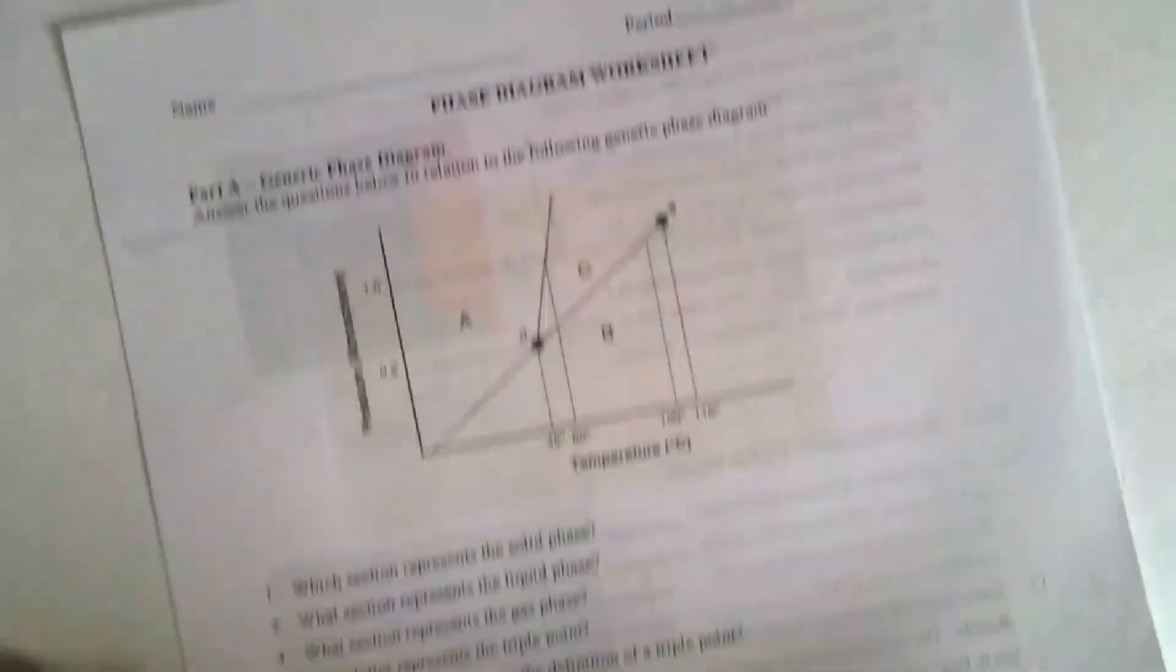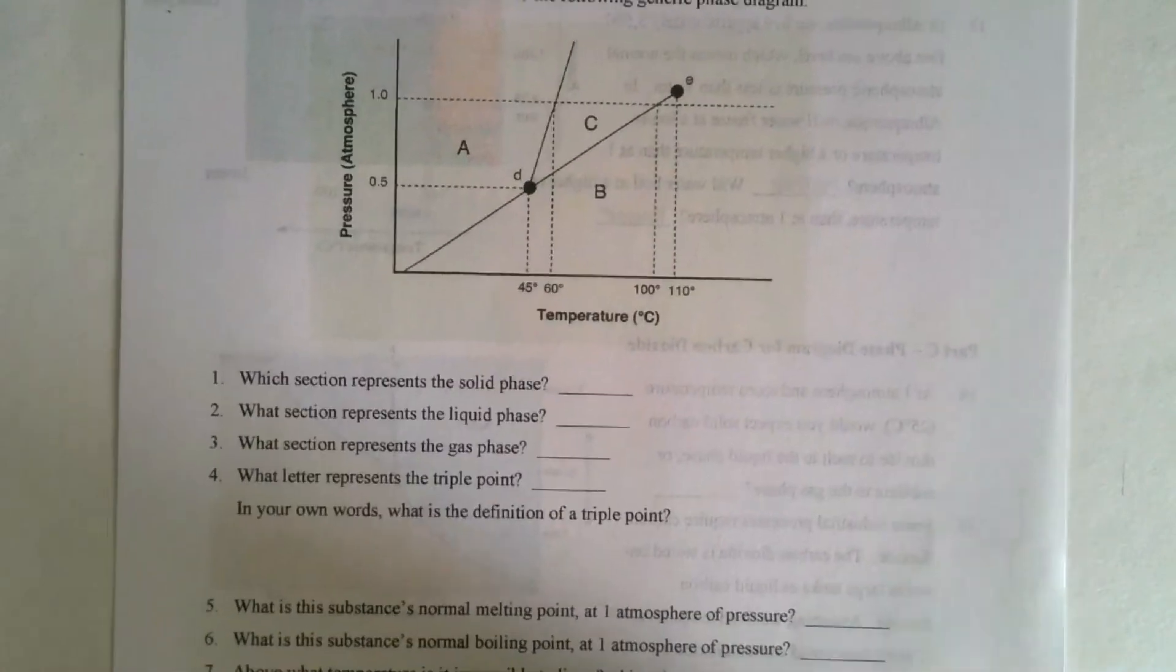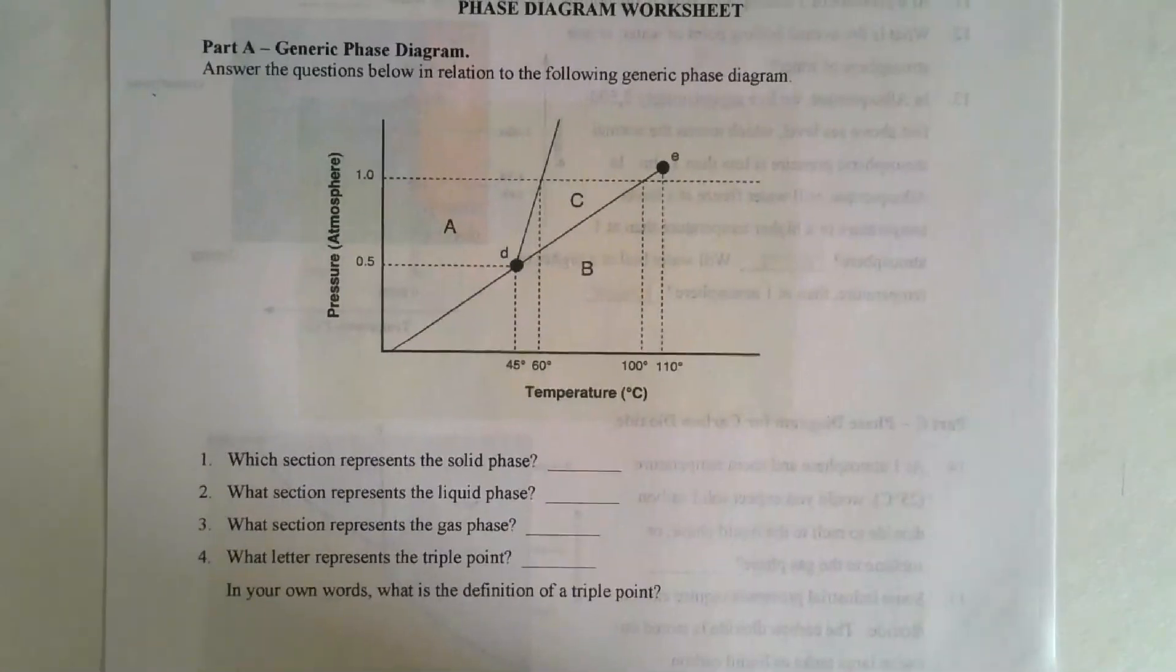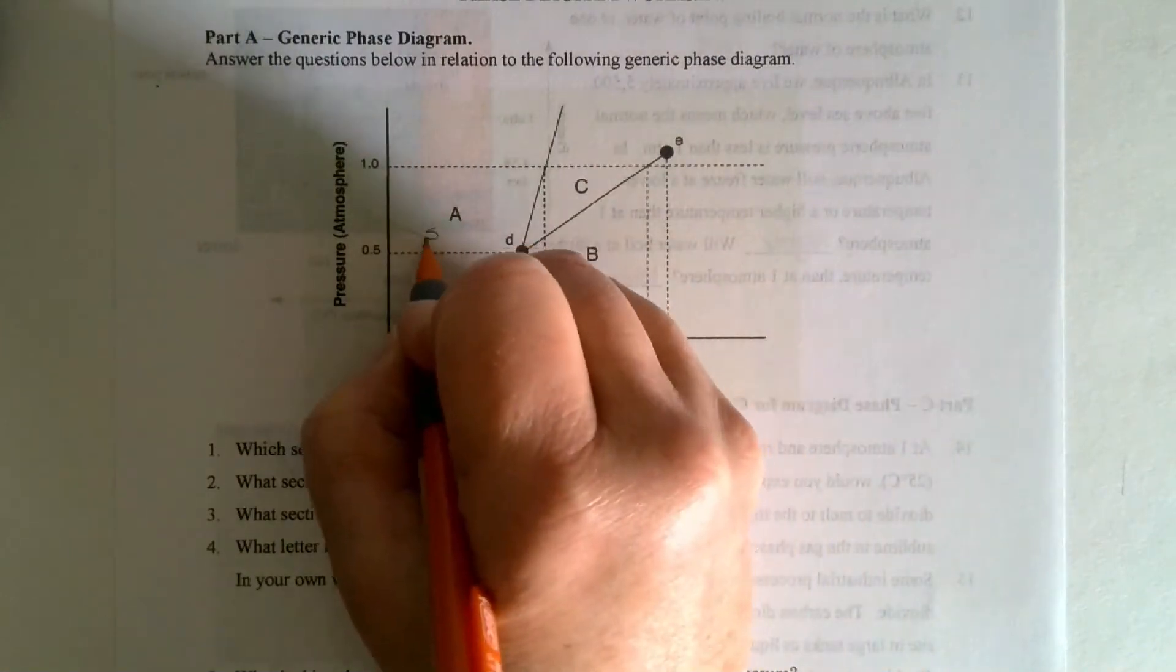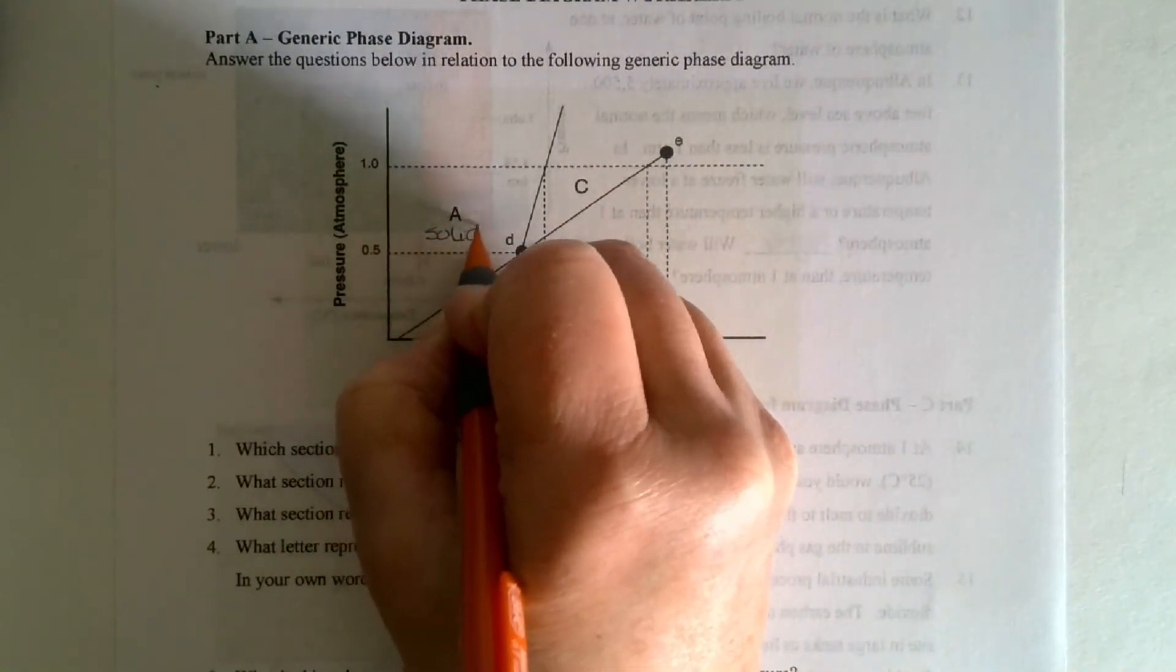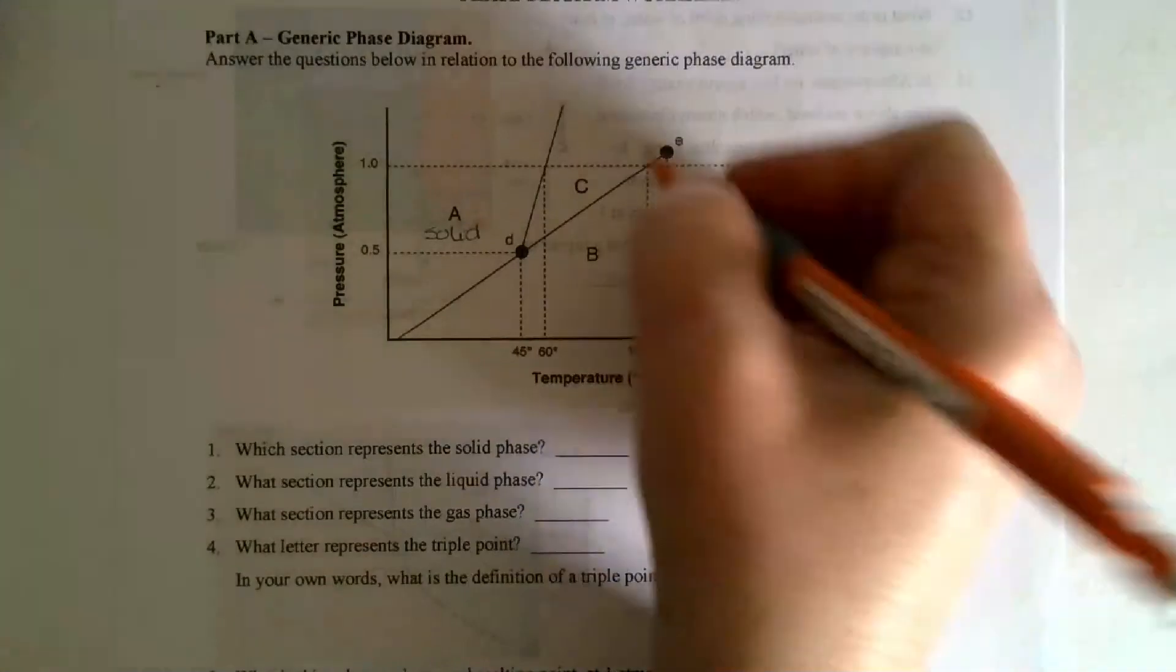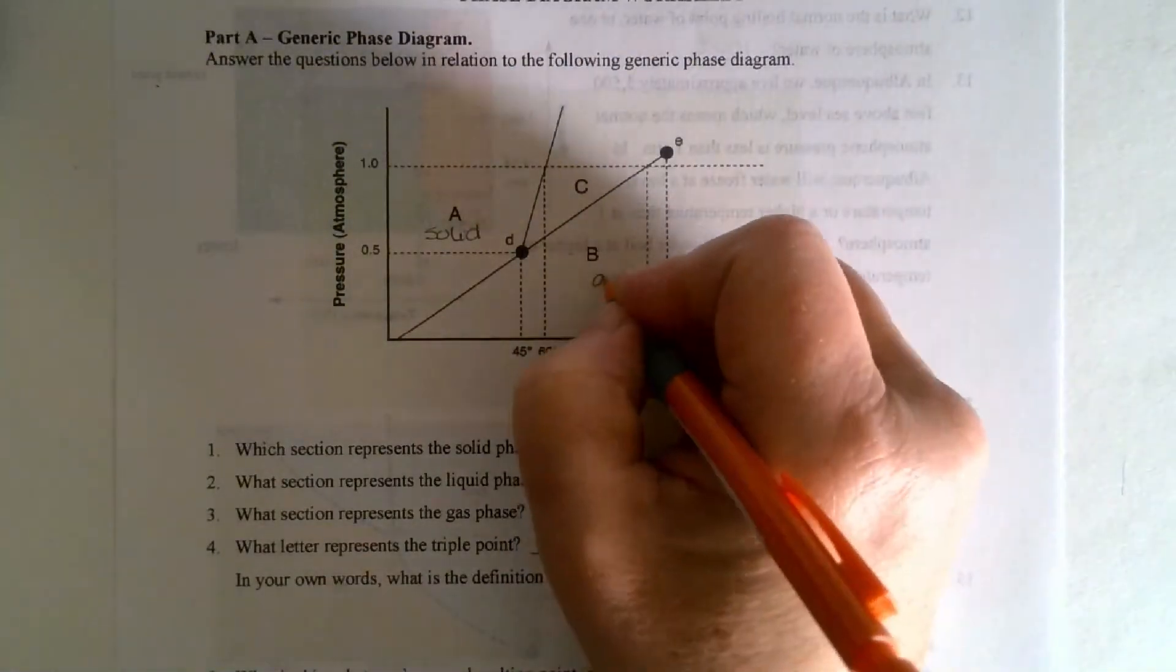Let's try another one. Here's a phase diagram. We don't know what it's like. It's very generic, but we can still look at it. We know that section A is a solid, low temperature, low pressure. We have a gas in this part.